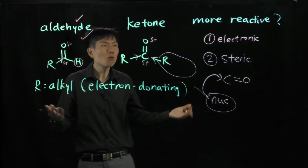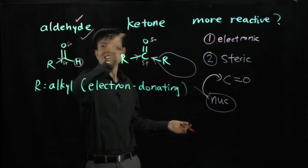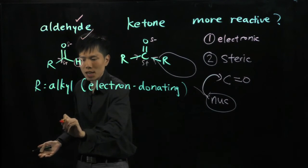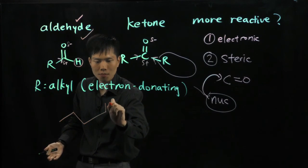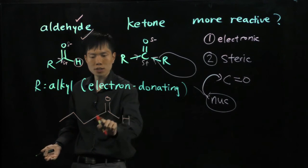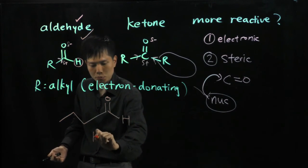So overall, you know that an aldehyde in general is more reactive than the ketone, which means that if we have a molecule with an aldehyde group, one, two, three, four, a butanal.